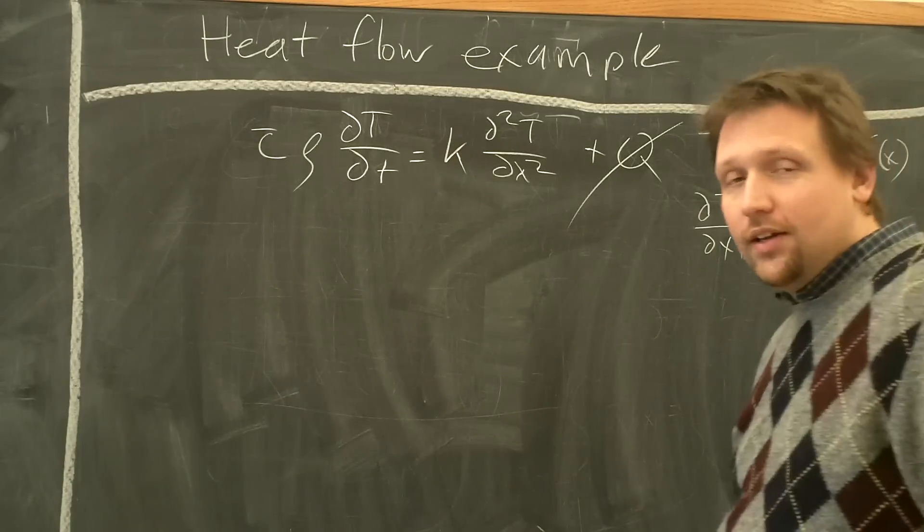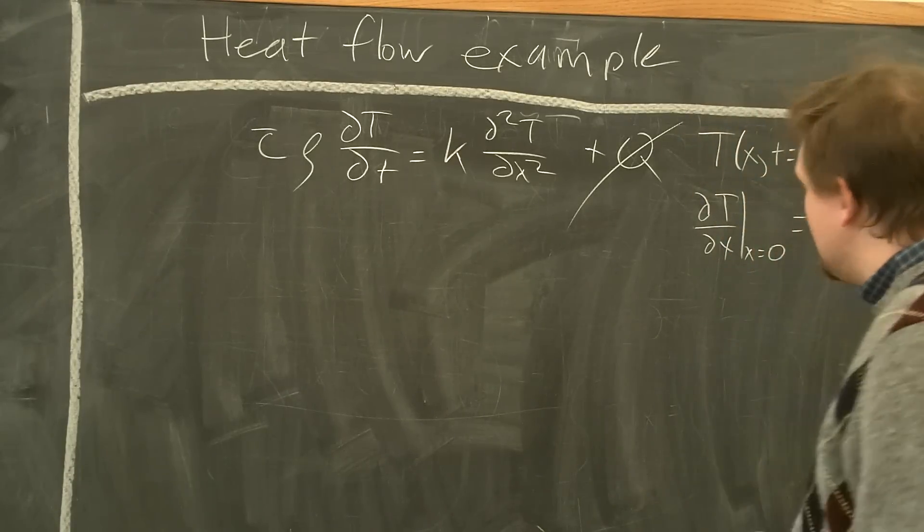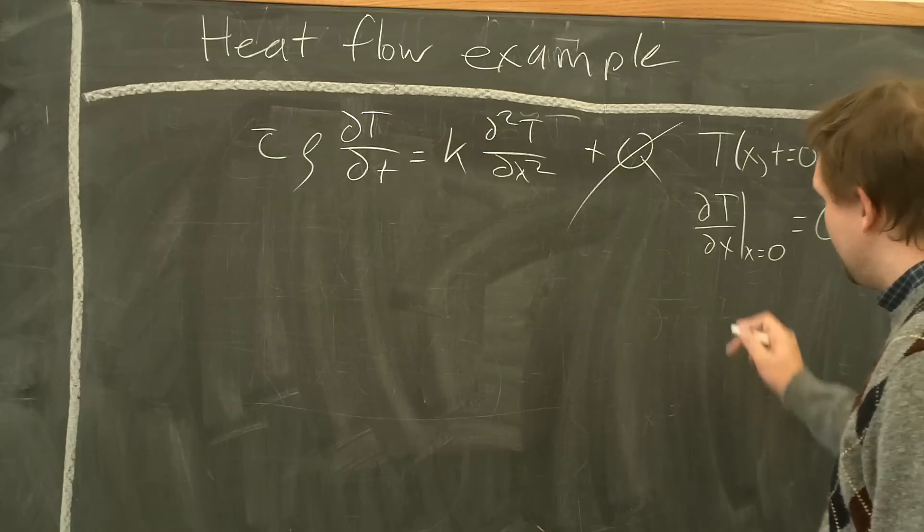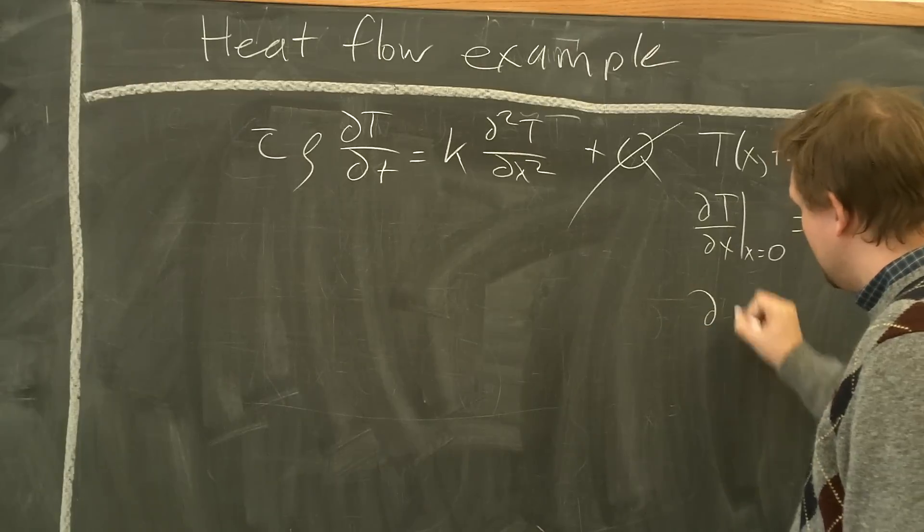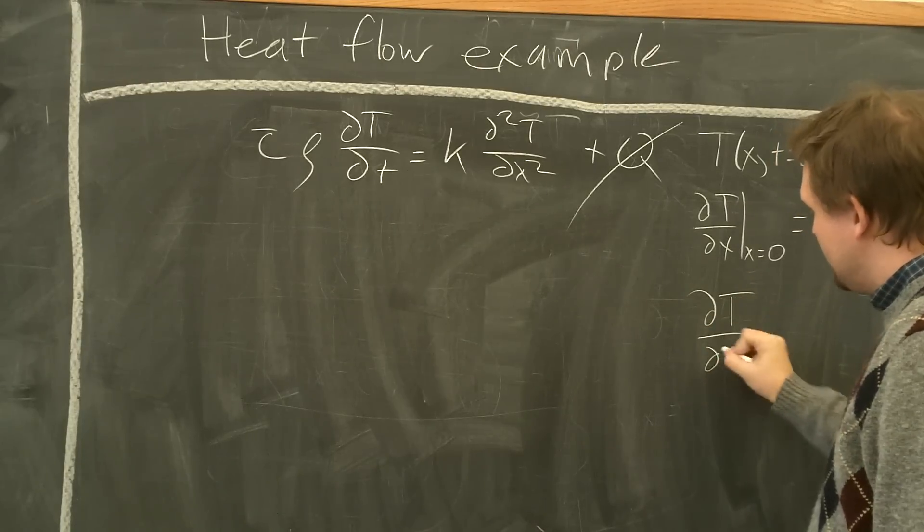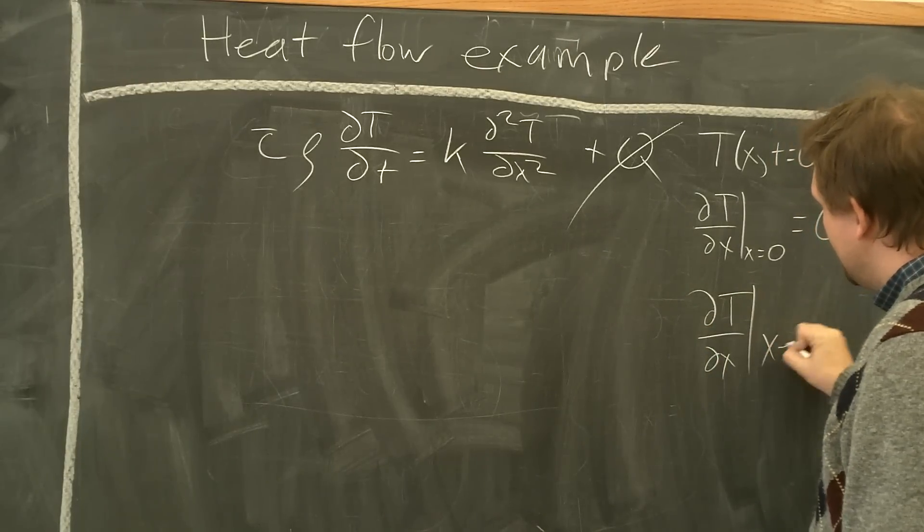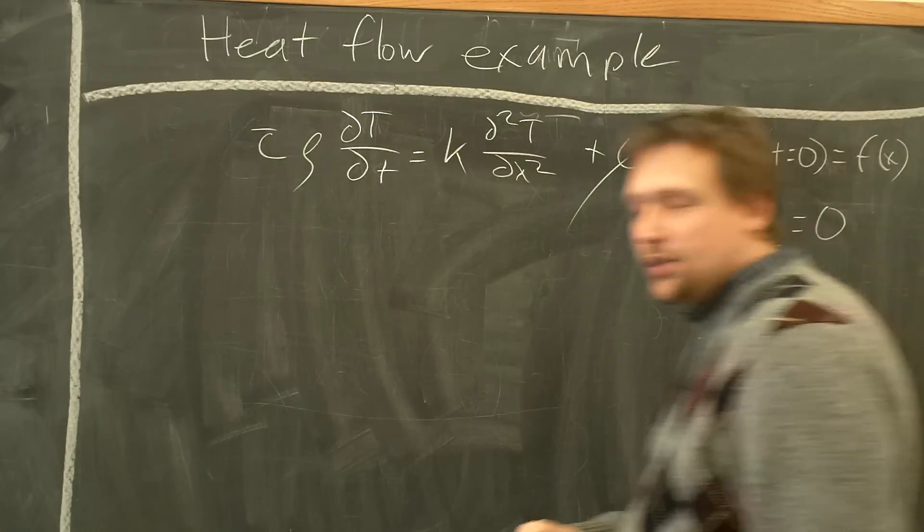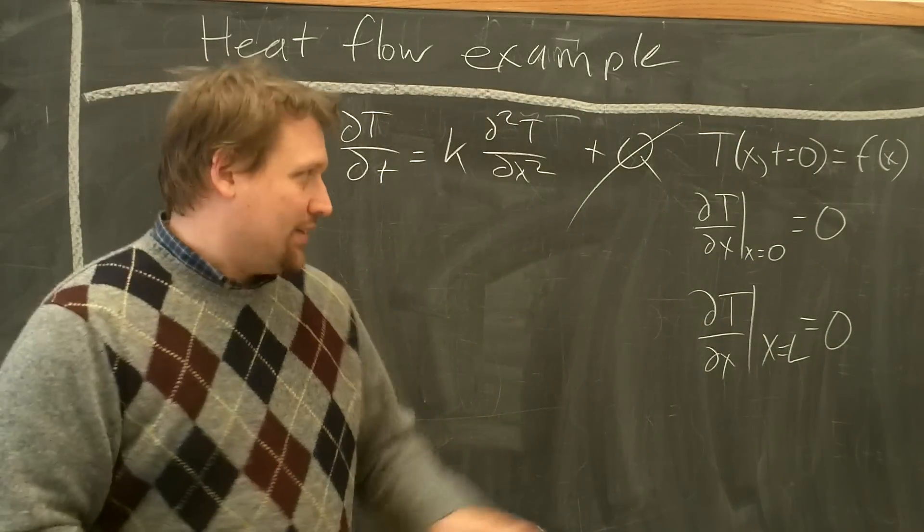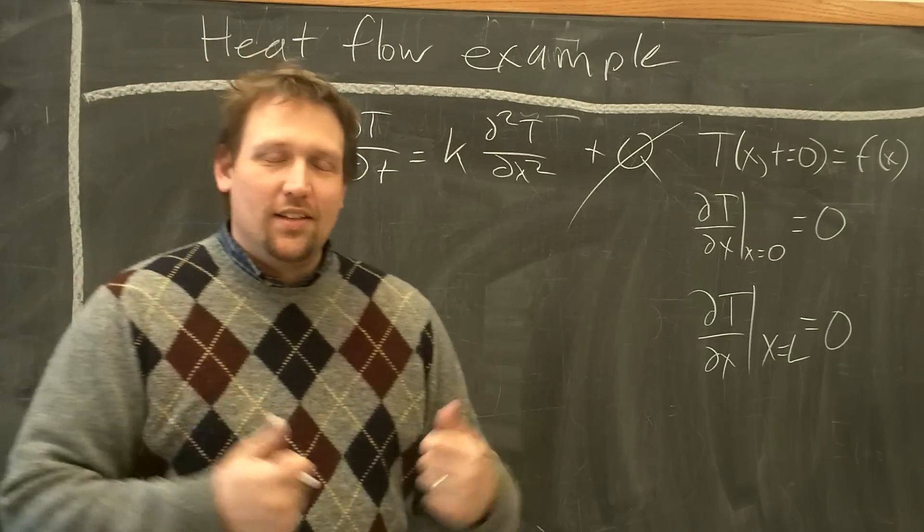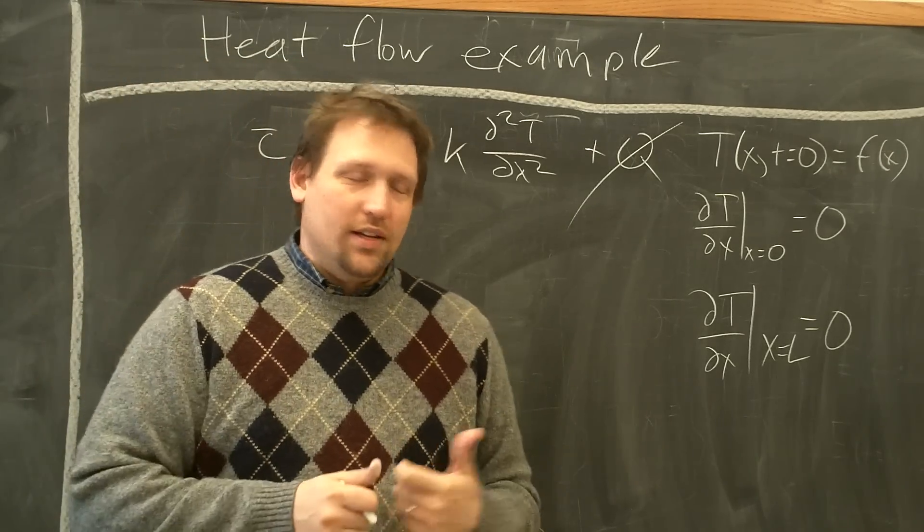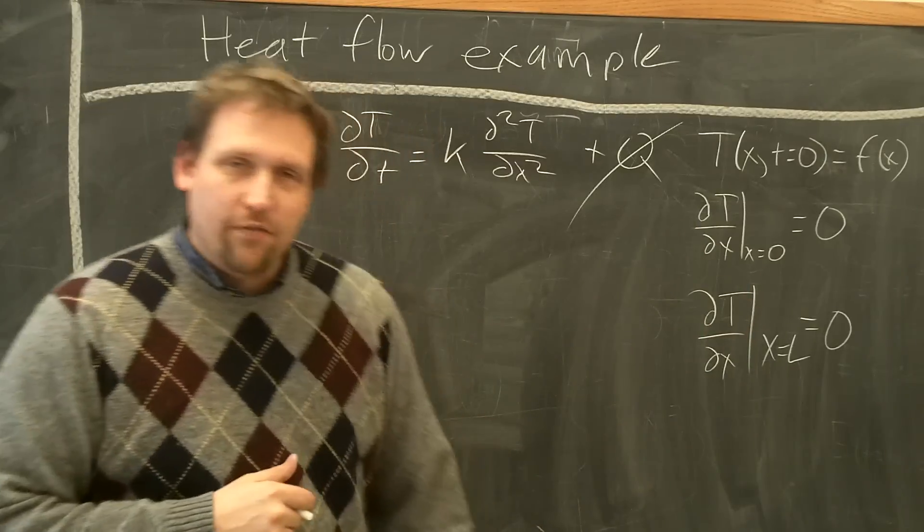The derivative of the temperature with respect to the position is zero. Similarly, at the other end, we have dT dx, X equals L equals zero. So this is an example of a rod that has an additional temperature distribution, but at both ends, there is no heat entering or leaving, since there's no gradient in the temperature as a function of position.